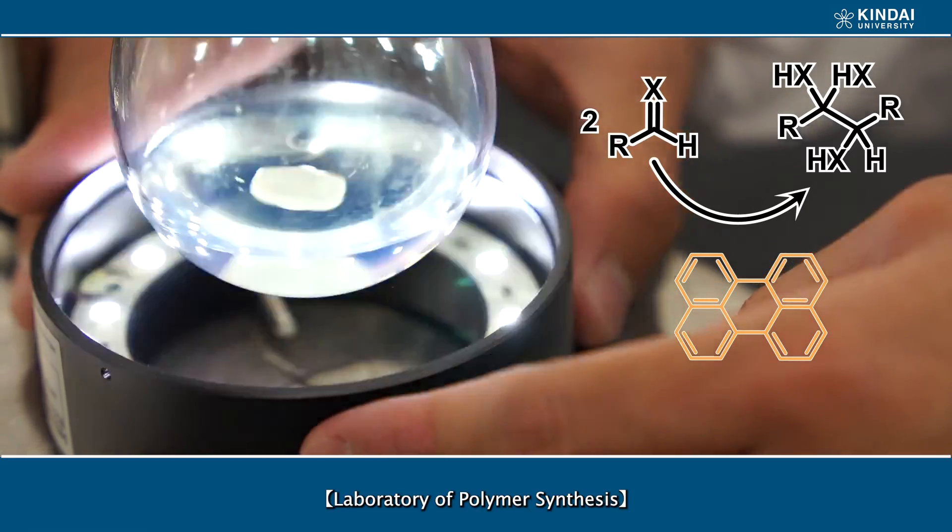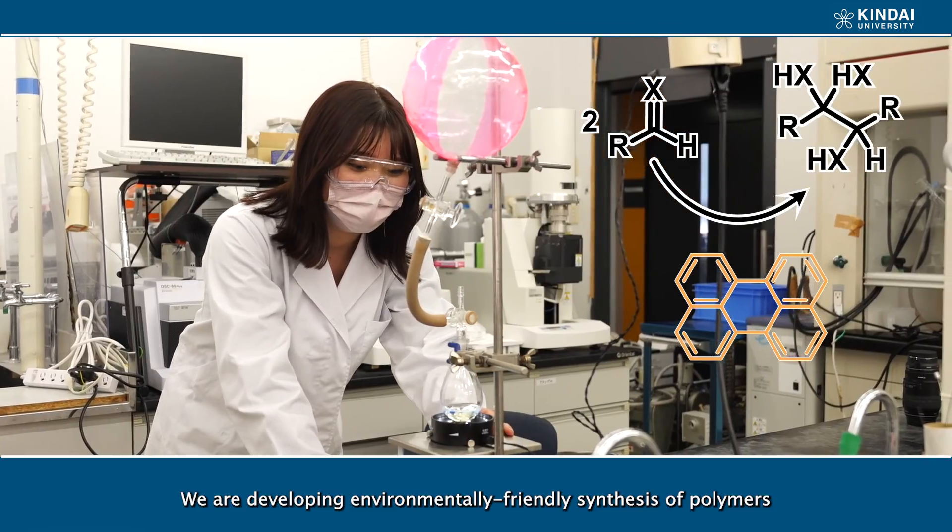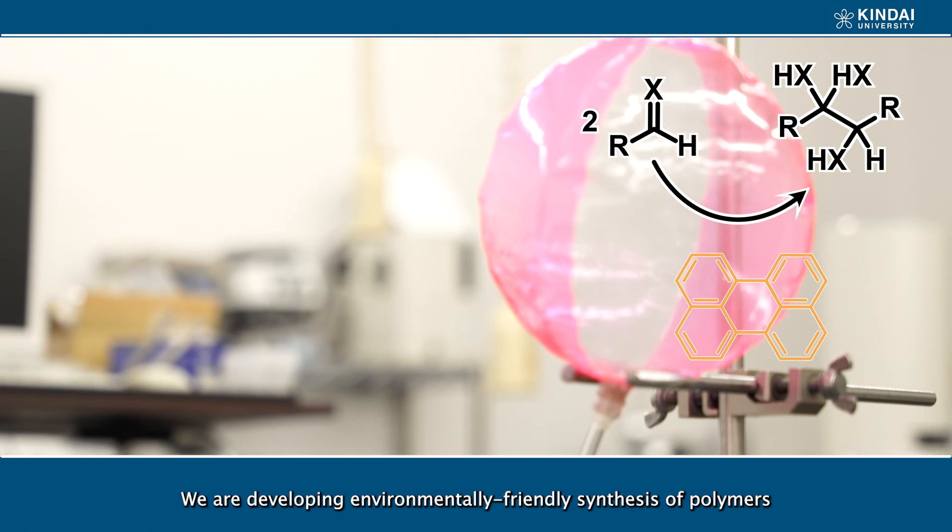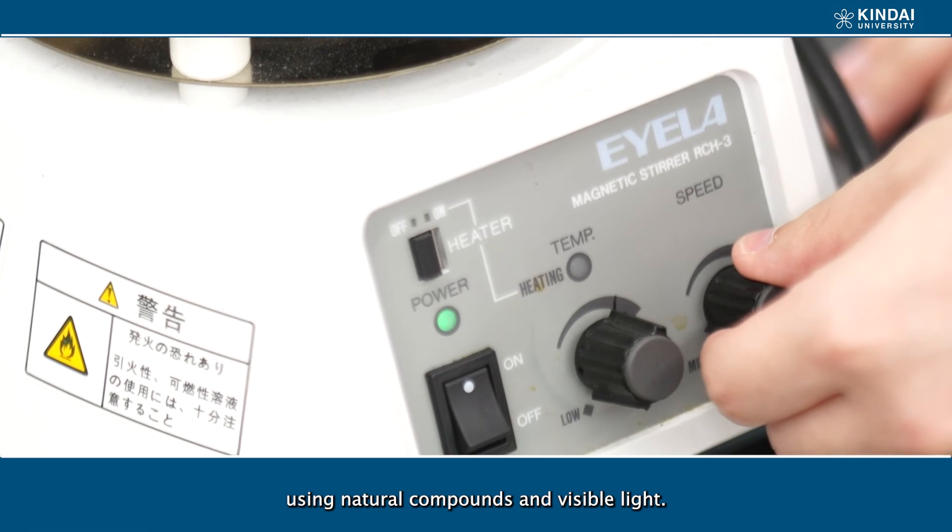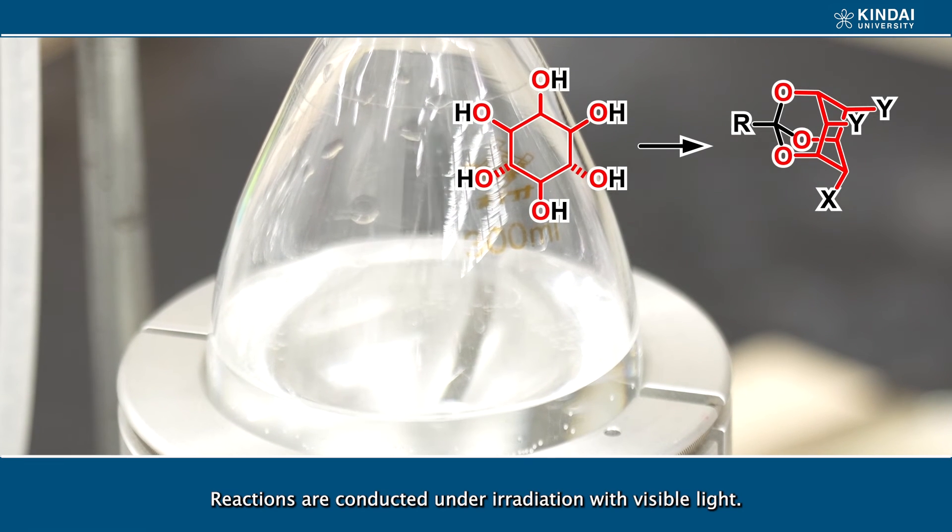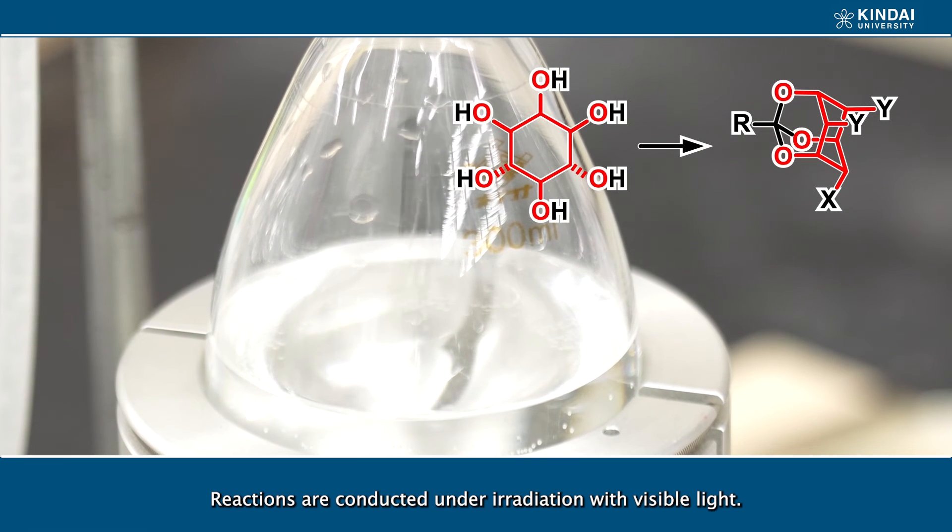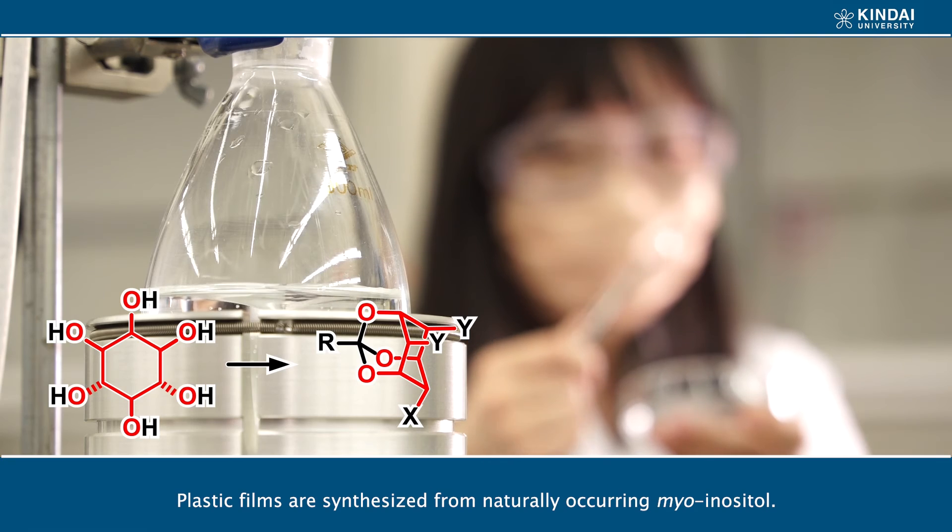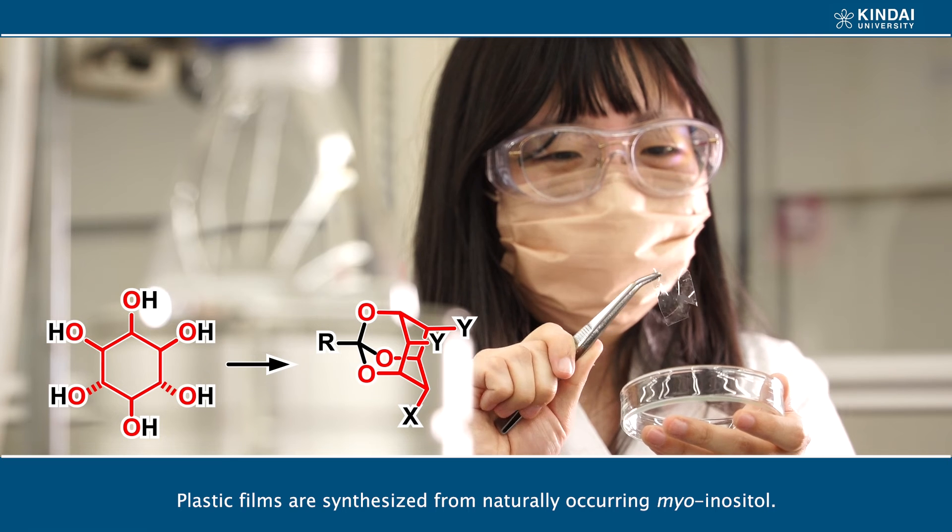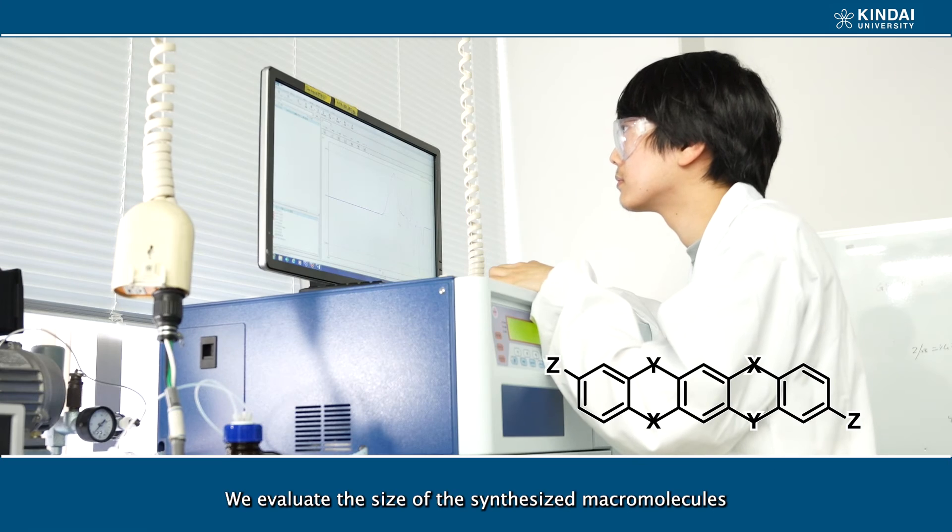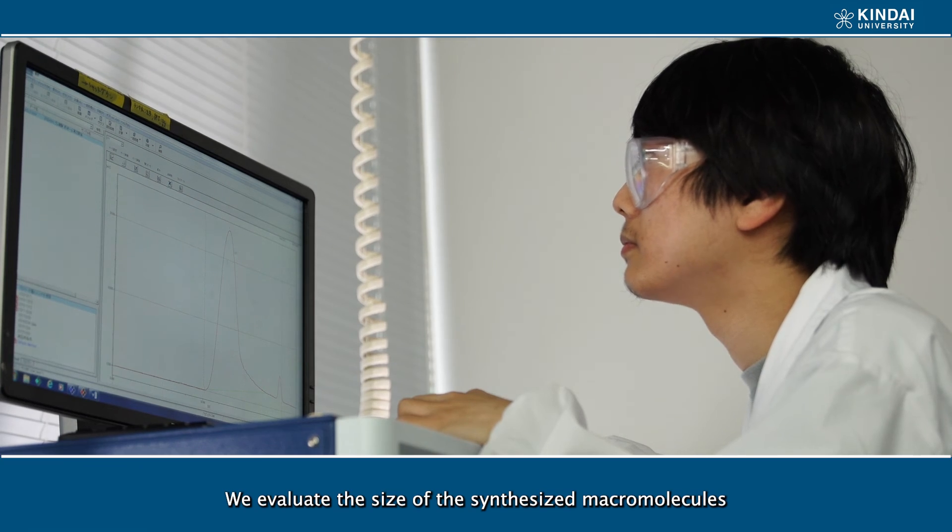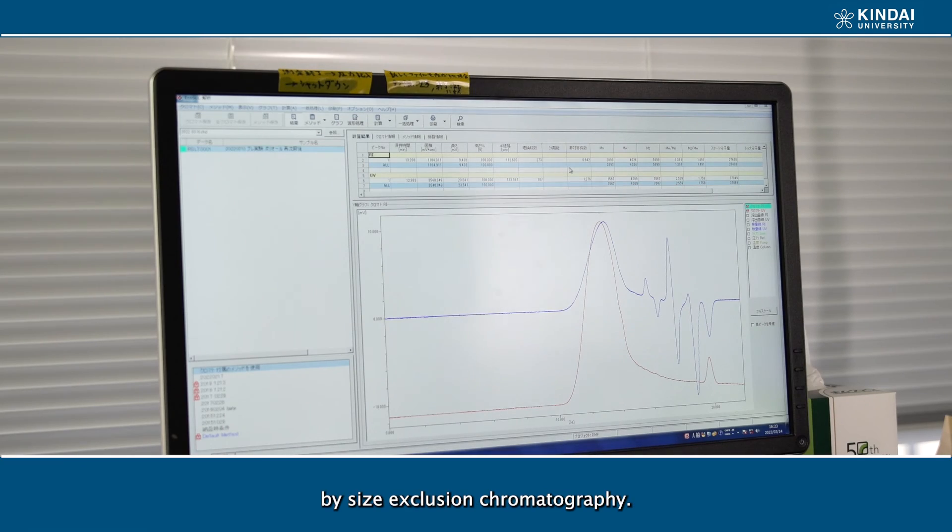Laboratory of polymer synthesis. We are developing environmentally friendly synthesis of polymers using natural compounds and visible light. Reactions are conducted under irradiation with visible light. Plastic films are synthesized from naturally occurring monomers. We evaluate the size of the synthesized macromolecules by size exclusion chromatography.